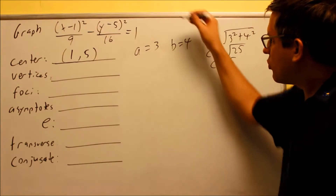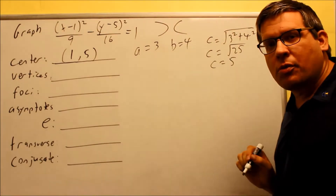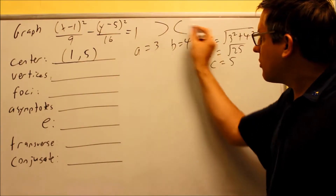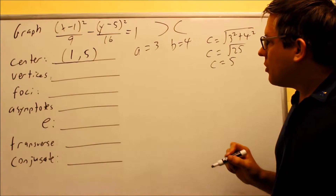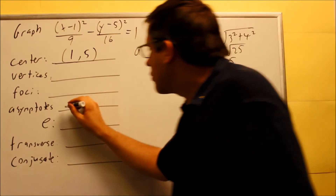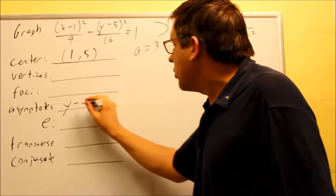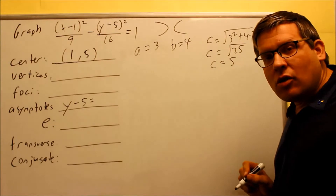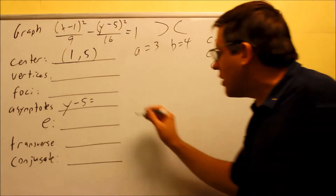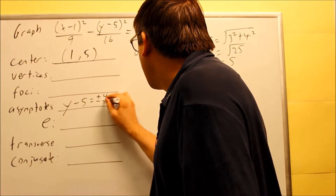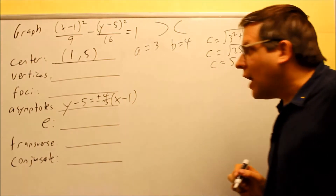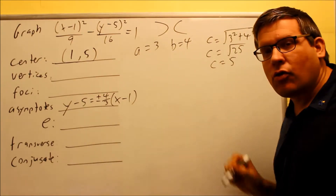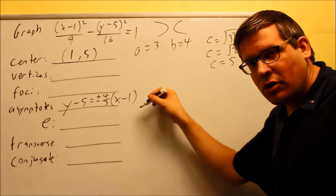For asymptotes, we have to know which direction the hyperbola opens. Because x comes first, it opens sideways. For a sideways-opening hyperbola, the asymptote formula is y minus k equals plus or minus b over a times (x minus h). So we get y minus 5 equals plus or minus 4 thirds times (x minus 1). That's the equation for your asymptotes, taken directly from the formula in the notes.